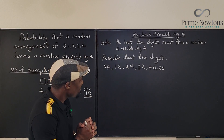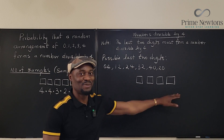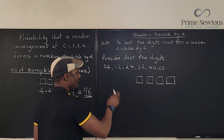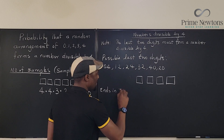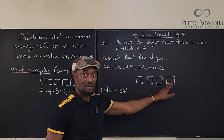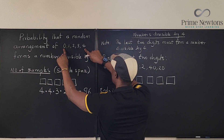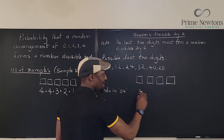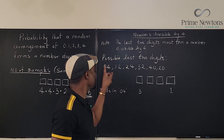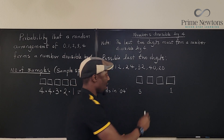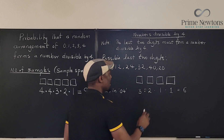Now I'm going to treat each pair as a block. So instead of having five digits, I'm going to have just four positions — the last block counts as one. If the number ends in 04, that's the block. Since I've used 0 and 4, I have digits 1, 2, and 3 left — 3 options for the first digit. Then 2 options, then 1. So the number of arrangements ending in 04 is 3 × 2 × 1 = 6.